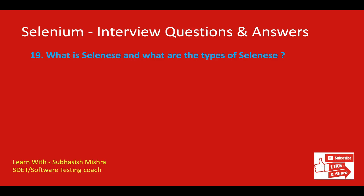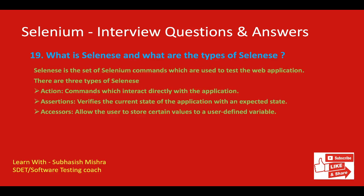What is Selenium and what are the types of Selenium commands? Selenium is a set of commands used to test web applications. We can test broken links, the existence of objects on the UI, Ajax functionality, alerts, windows, list options, and more. There are three types of Selenium commands: Actions — commands that interact directly with the application; Assertions — verify the current state of the application with an expected state; Accessors — allow the user to store certain values to a user-defined variable.